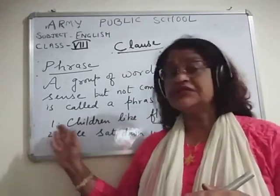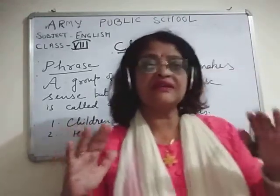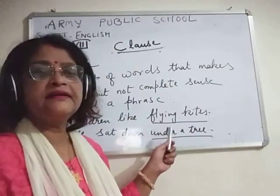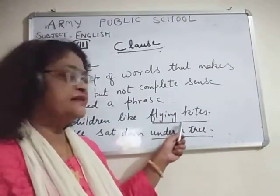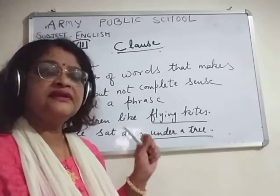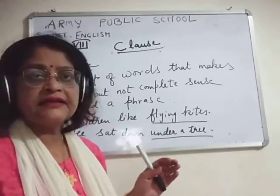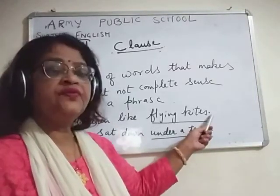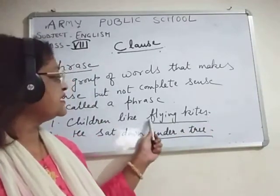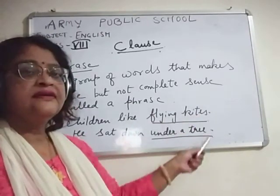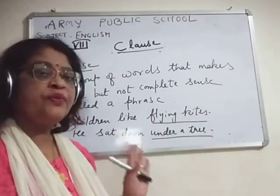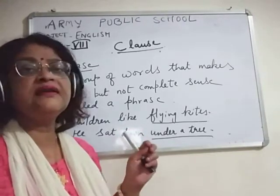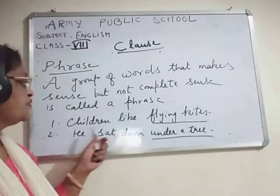This sentence starts with a capital letter and ends with a full stop. But children, if we take 'flying kites' — this is also a group of words but it is not making a complete sense; it is making some sense. So this is a phrase. Now we will take another sentence: 'He sat down under a tree.' This whole sentence is making a complete sense — this is a sentence. But if you take a part of it like 'under a tree,' it is making some sense but not complete sense, so that is a phrase.